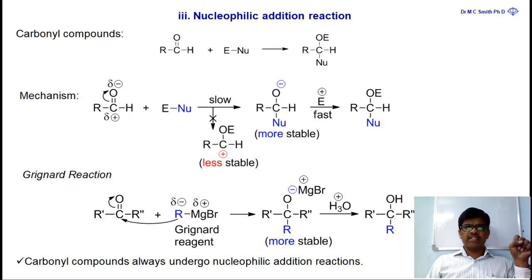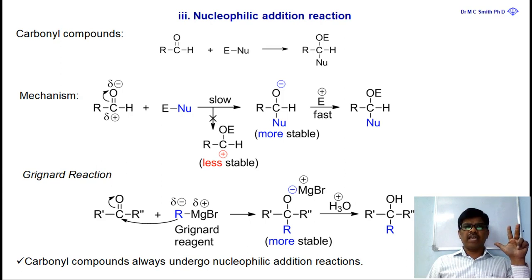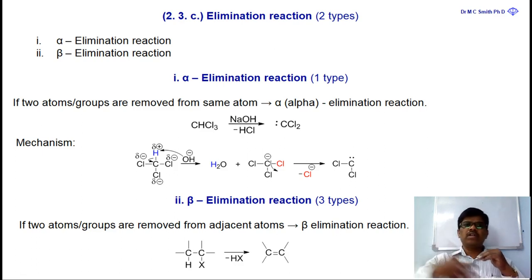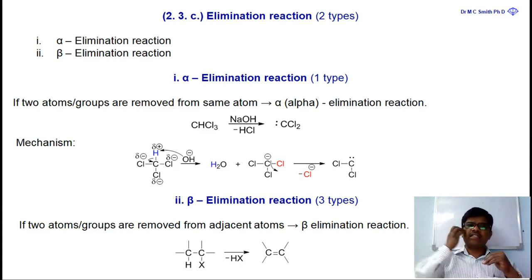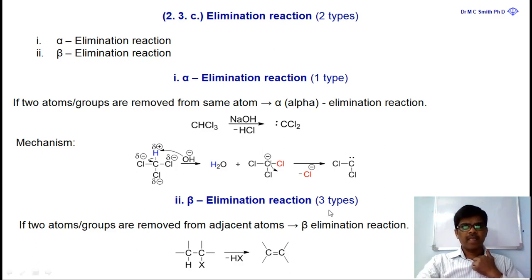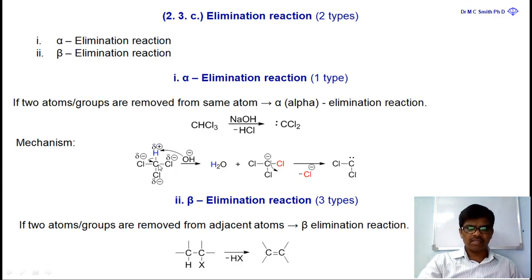Now we move to the third topic: elimination reactions. By the name, groups are eliminated from the molecule. An elimination reaction is a reaction where atoms or groups are removed from the reactant. Based on the type of elimination, these reactions are of two types: alpha elimination and beta elimination.